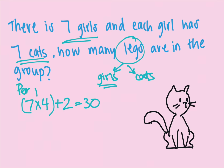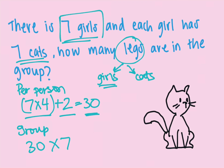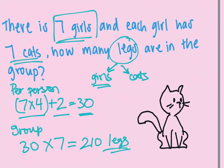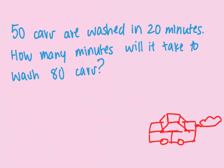So you get 30 — that's per person. Each girl has seven cats: multiply seven cats by four legs, then add two legs for the girl, and you get 30 legs per person. For the group total, take that 30 and multiply by seven because there are seven girls in the group. So 30 multiplied by 7 is 210 legs in total.